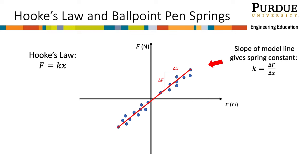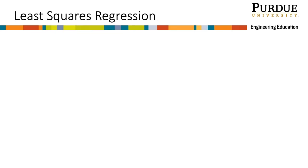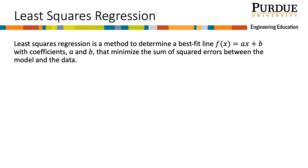So how can we find an equation of this line? A common method to find a best fit line is least squares regression. Least squares regression is a method to determine a best fit line, f of x equals ax plus b, with coefficients a and b that minimize the sum of the squared errors between the model and the data.